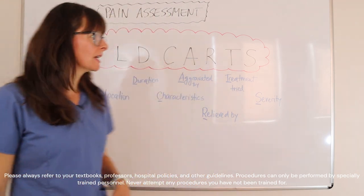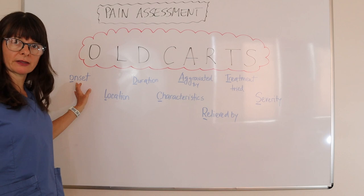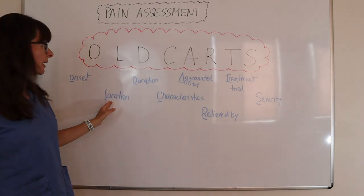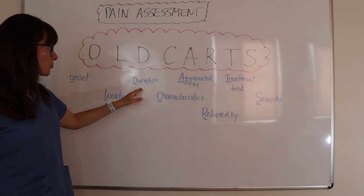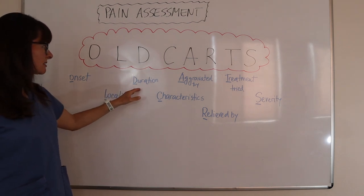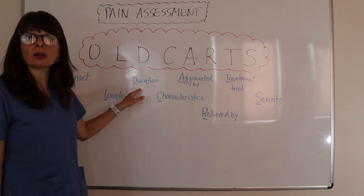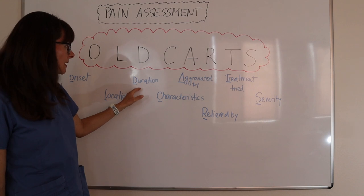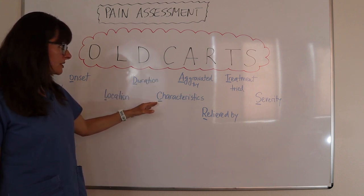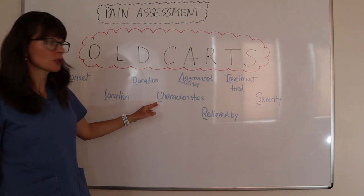OLD CARDS stands for O — Onset, which is when the pain starts. L is Location, where the pain is. D is Duration — this may seem redundant from onset, but it refers to whether the pain is continuous or intermittent, or how long the pain lasts when it comes. C is Characteristics or characterizing factors, such as throbbing, sharp, achy, or any kind of pain description.